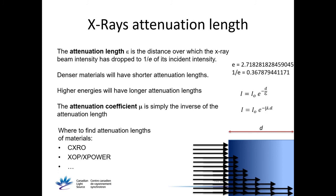Denser materials will have shorter attenuation lengths, but higher energies are going to have longer attenuation lengths — that's why hard X-rays go through stuff easily. There's also the attenuation coefficient, which is the inverse of the attenuation length. Where do you find attenuation lengths? There are several options: one is the CXRO website, another is the XOP X-Power gadget, which is a free program.